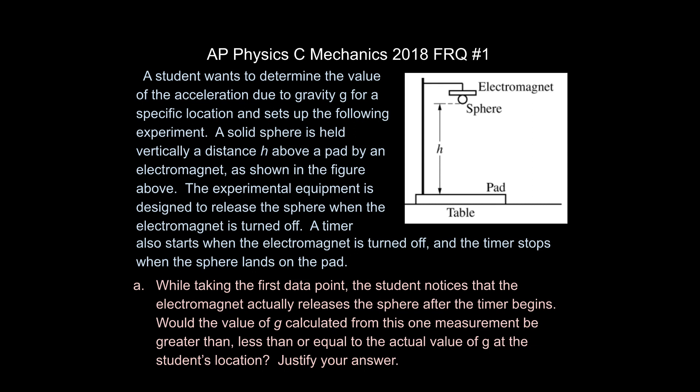So what happens is you have a solid sphere held vertically a distance H above a pad by an electromagnet shown in the figure above. Experimental equipment is designed to release the sphere when the electromagnet is turned off. A timer also starts when the electromagnet is turned off and the timer stops when the sphere lands on the pad. Part A: while taking the first data point, the student notices that the electromagnet actually releases the sphere after the timer begins. Would the value of g calculated from this one measurement be greater than, less than, or equal to the actual value of g at this location? Justify your answer.